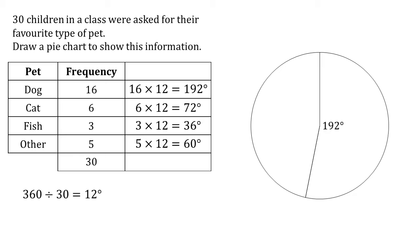If you're using a 180 degree protractor, 192 degrees is a little bit tricky. Just remember, you can either draw a straight line all the way down for your 180 and add on the further 12 degrees to make 192, or you can measure the other side of the angle — 360 degrees minus 192. Either way, we've got our first slice. We then measure from the last line that we drew; 72 degrees is our second slice. There is the cat slice.